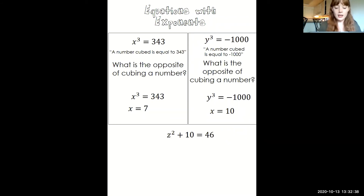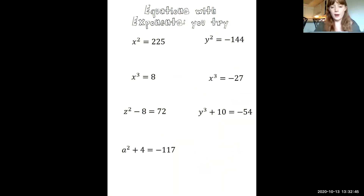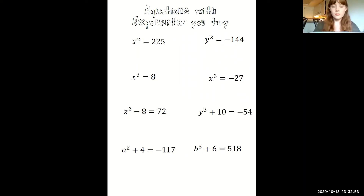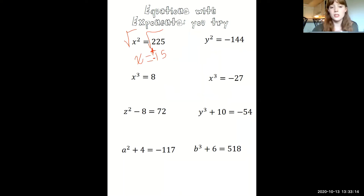Now try some problems on your own — pause the video and try these questions, then check back for the answers. The first one: x squared equals 225. We take the square root of both sides to get x equals positive 15 or negative 15. Either one works when squaring a number.